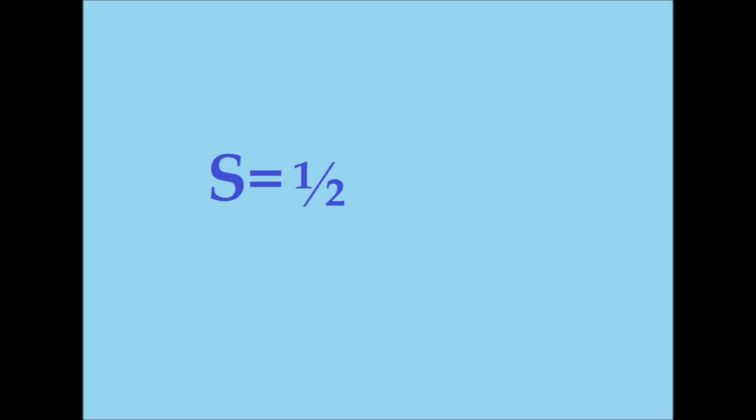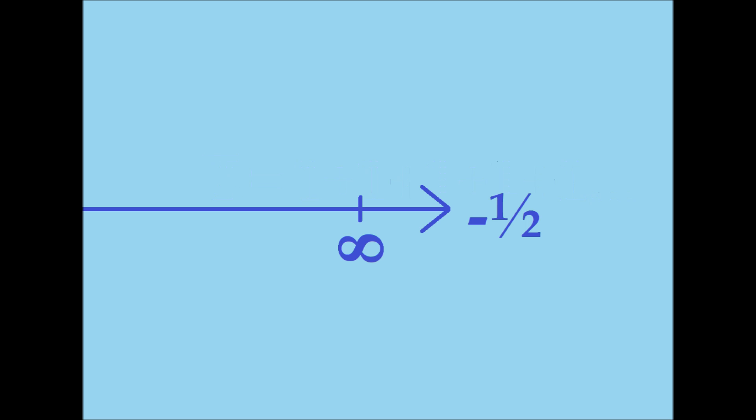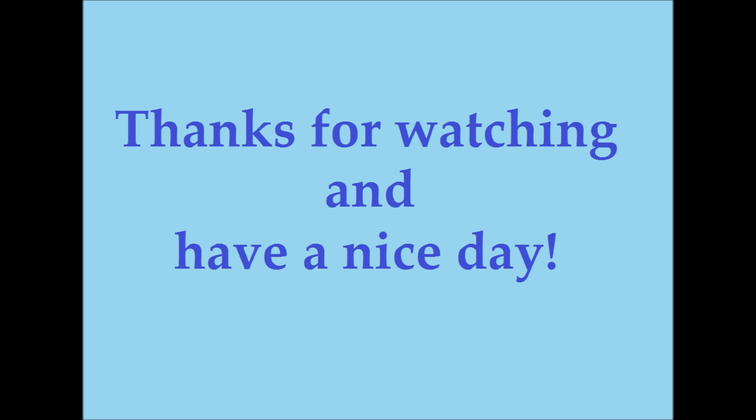So let's go back to our sum: s equals one-half. If we merely subtract one, we've moved to negative one-half, which we know is the sum of an infinite string of ones, and that, dear viewer, is how we count past infinity. Thanks for watching, and have a nice day.